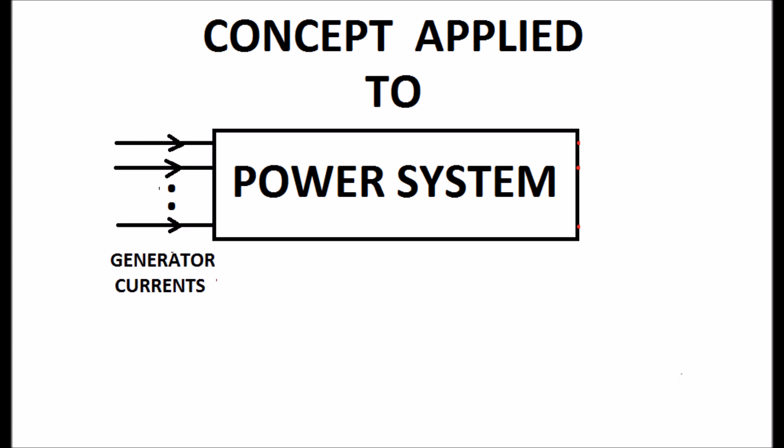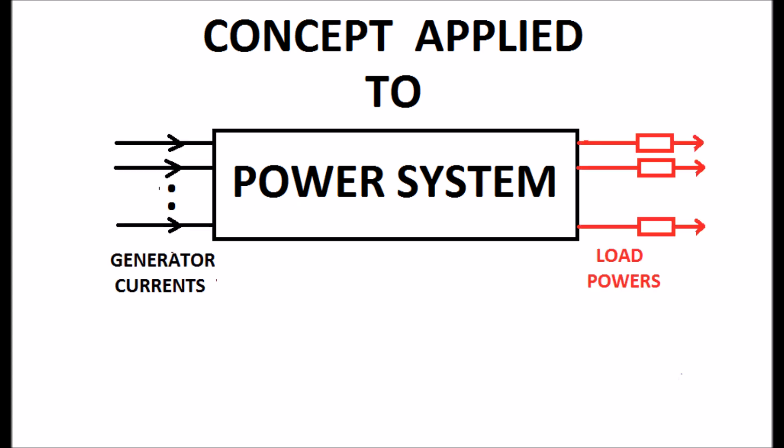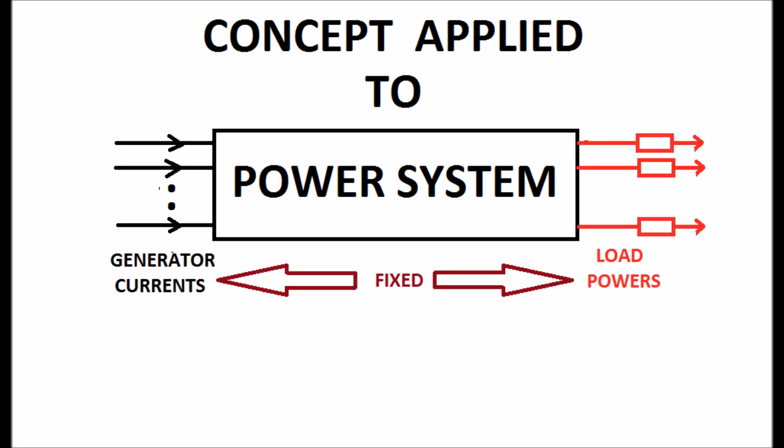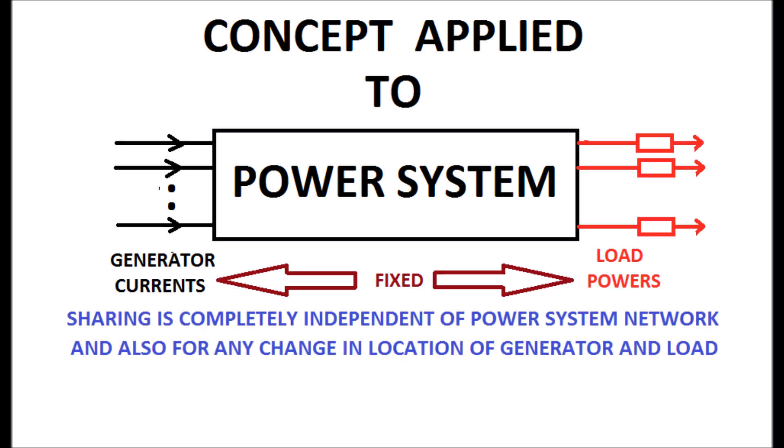The concept can be applied to a power system. Once the input currents and output powers are fixed, changes in the power system network cannot change the sharing of loads by source, because the sharing is completely independent of the power system network and also for any change in the location of generator and load.